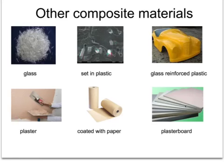Here are two other examples of composite materials. The plastic for this car body would be too weak unless it was reinforced with glass fibres. This glass-reinforced plastic, or glass fibre, is a much tougher material than the plastic on its own. Plaster is a very brittle material but it can be sold in sheets if surrounded by paper — the paper gives it additional strength.